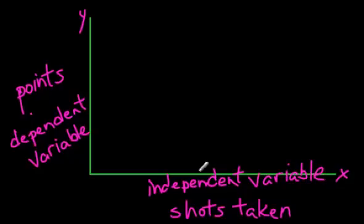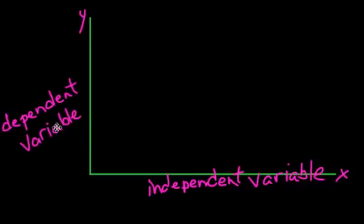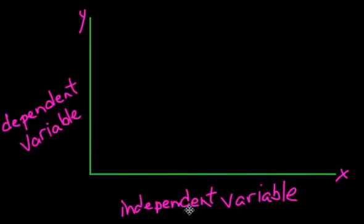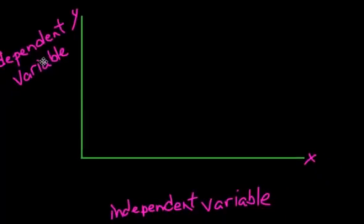And the part down here is called the independent variable. So for example, let's think of another situation. Instead of basketball, let's think about, let's see, I'm just going to erase all this here. And heck, I'm even going to move this over a bit. Isn't that nice? You couldn't do this on chalkboards.